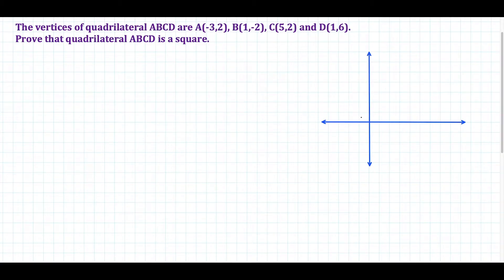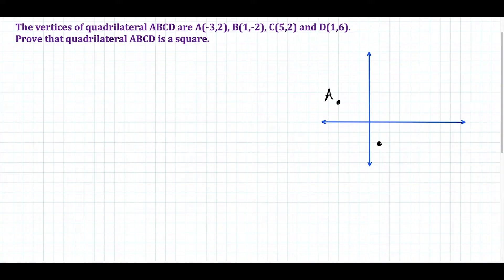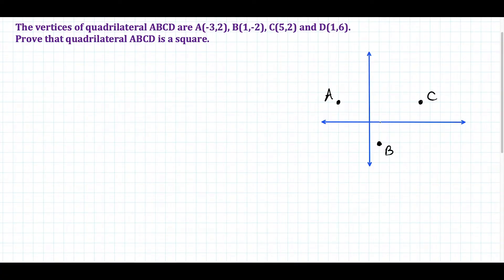We're starting off with this quadrilateral here, and I'm going to go ahead and plot all these points first. So A is at negative 3, 2 — that's over here in quadrant 2. B is at 1, negative 2, and that's going to be over here in quadrant 4. C is at 5, 2 — so we're going over 5 and up 2. And then point D is at 1, 6 — so we're going over 1 and up 6.